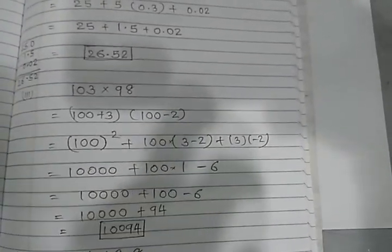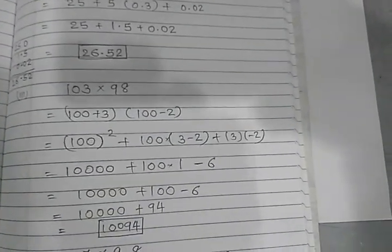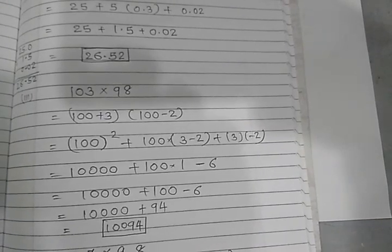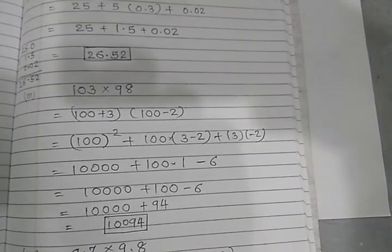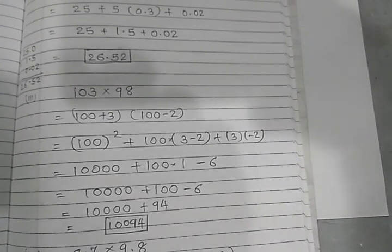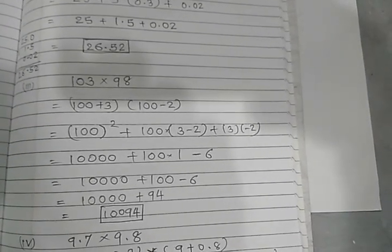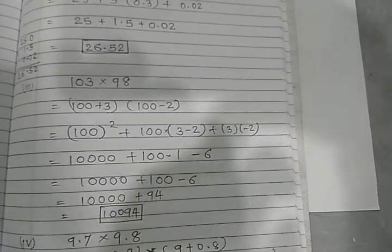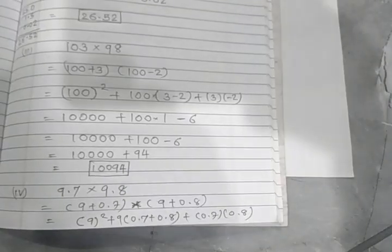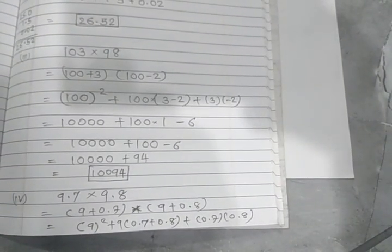Second one: 103 multiply by 98. 103 means 100 plus 3, 98 means 100 minus 2. So you can do this by the identity. Fourth one, 9.7, 9.8.